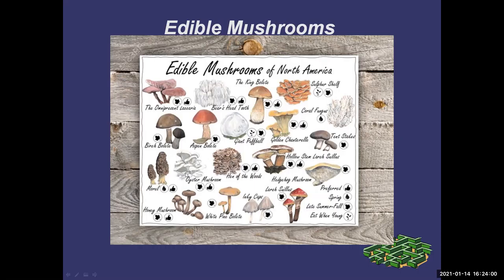Oyster mushrooms — you can buy those in the grocery store. They are quite common. They bloom in the summer and in the fall. There are different varieties — I'll let you read up on those on your own.